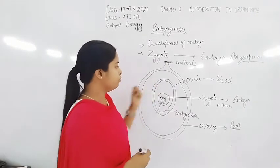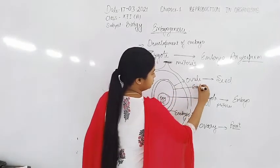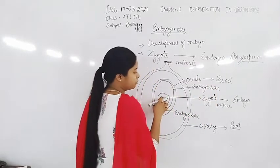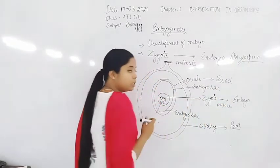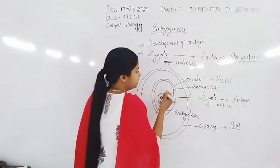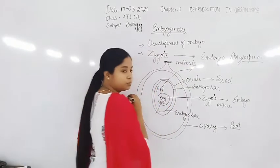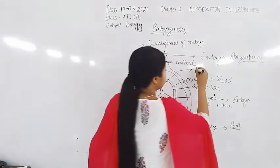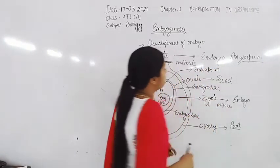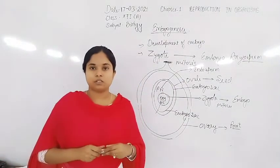Inside the ovule or embryo sac, there is another cell — the polar nuclei — which is converted into the endosperm after fertilization. All these conversions take place after fertilization.